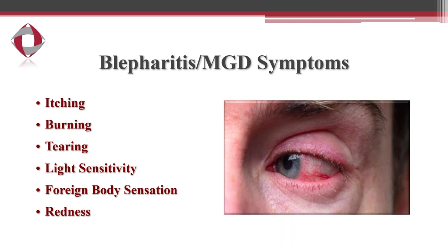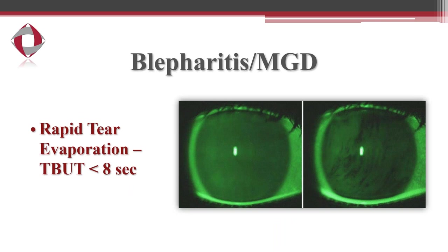When treating dry eye, the goal is to always control the inflammation and keep the patient comfortable. This is an example of tear film evaporation. The photo on the left shows a healthy stable tear film, and the photo on the right shows a tear film that is evaporating. Ideally you want the tear film to stay stable in between blinks for at least eight seconds — anything that evaporates quicker than eight seconds is considered abnormal. With these patients, their tear film will often evaporate almost instantaneously when they blink, causing a lot of discomfort.